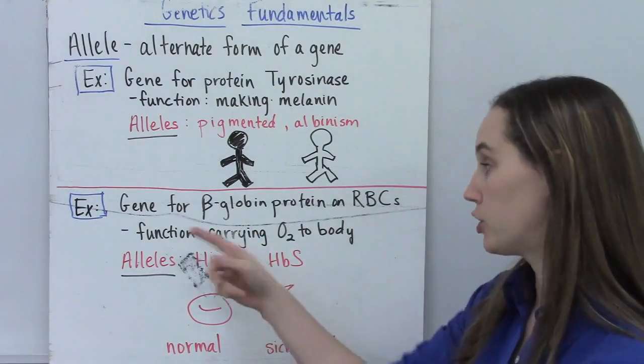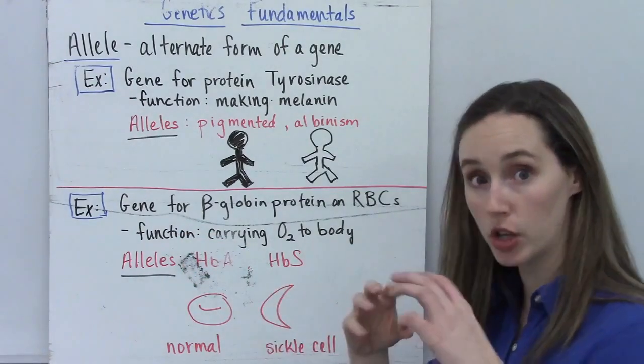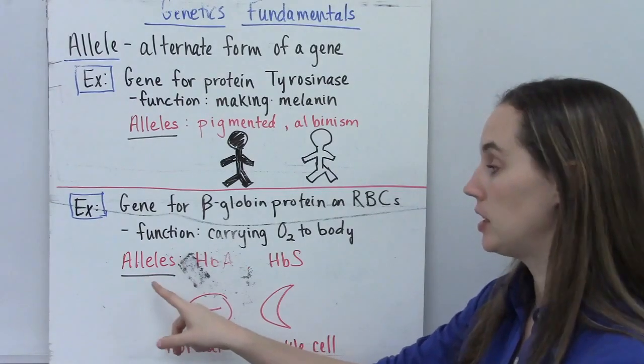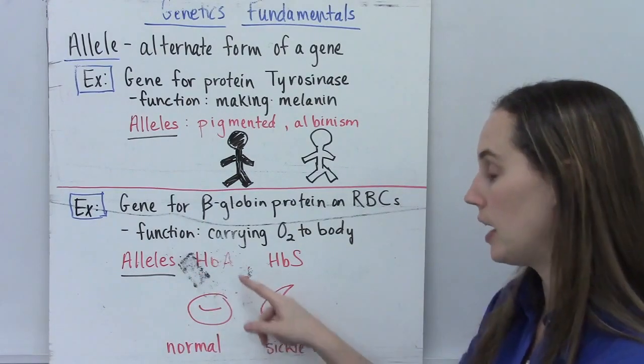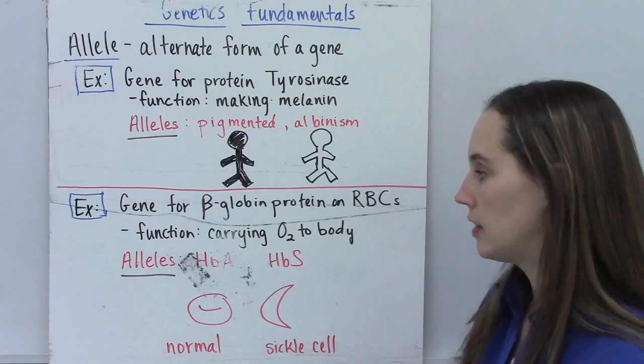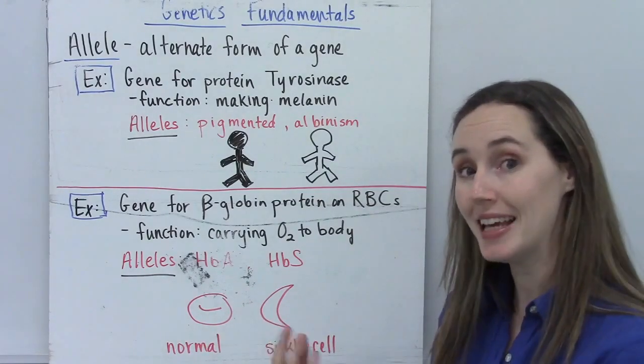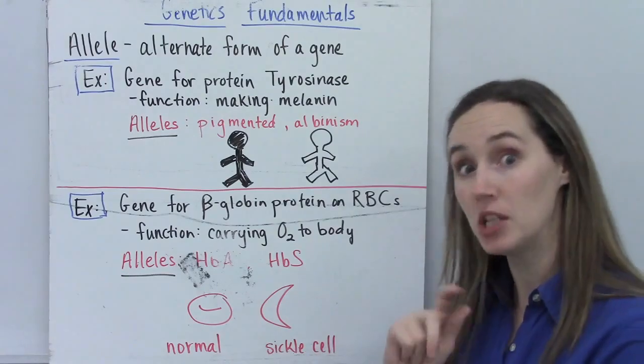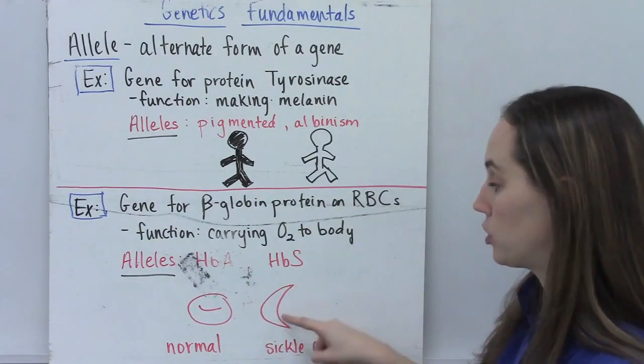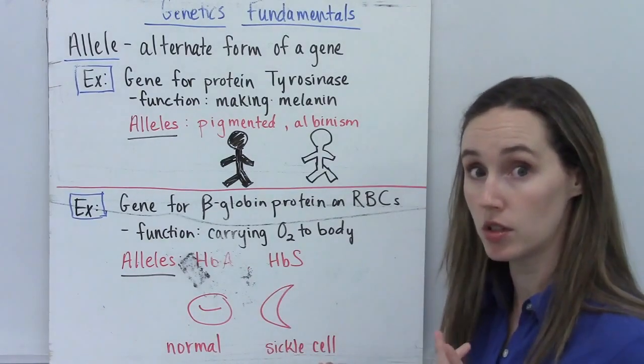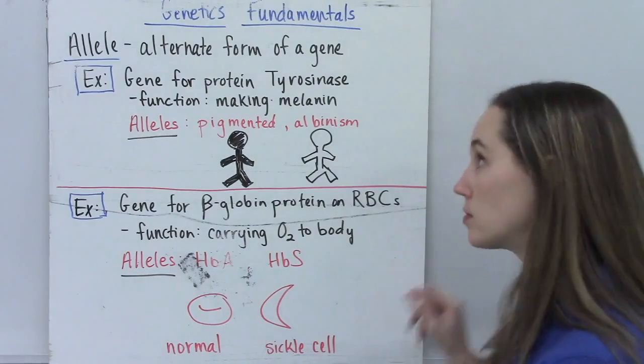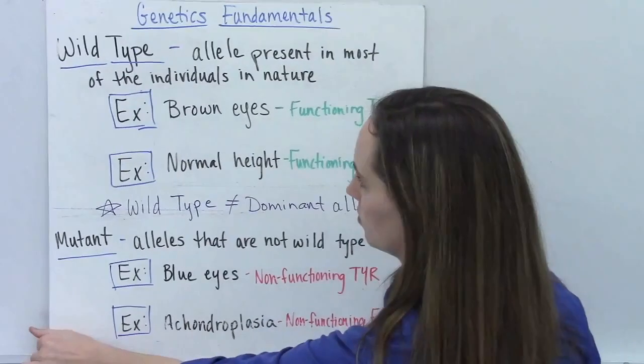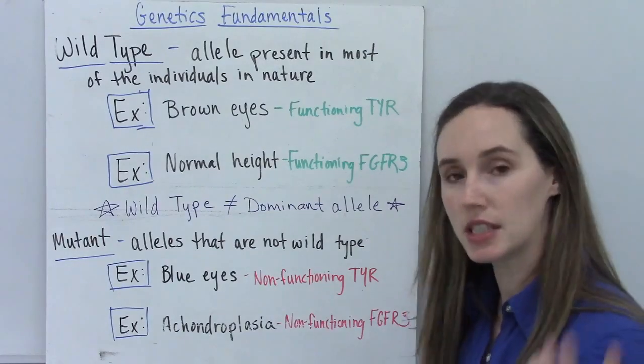Another example of different alleles for a gene: there's a gene for the beta globin protein on your red blood cells, and the function of this gene is to carry oxygen to the body. So it's on your red blood cells and it carries oxygen. Now there are some alleles of this. There's HbA, which is hemoglobin A, which gives you normal shaped red blood cells that carry oxygen quite well. And then there's HbS, another allele of the gene for beta globin that's mutated, and as a result the red blood cells are shaped like crescent moons or sickles. And so these are called sickle cells.